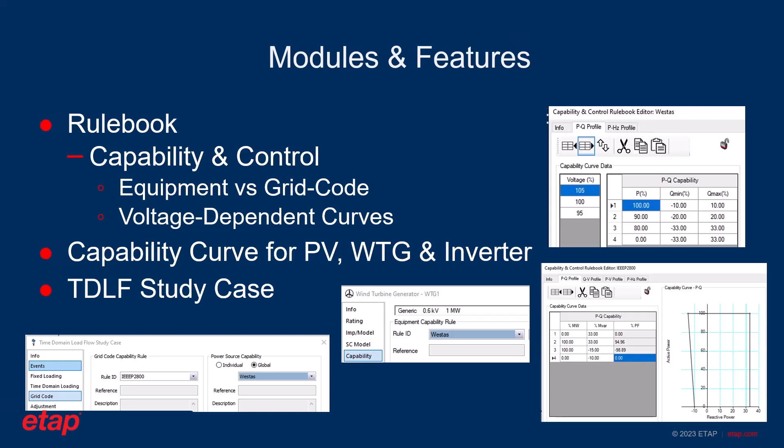Furthermore, the rulebook can be used for element capabilities: the PQ capability of elements can be used from predefined libraries, or the user can add the specific capability of their elements manually based on their vendor data. All these profiles are voltage dependent, so the user can add all the information at any certain voltage level. This includes capability curves for PVs, WTGs, and inverters, and is primarily used for time domain load flow analysis.